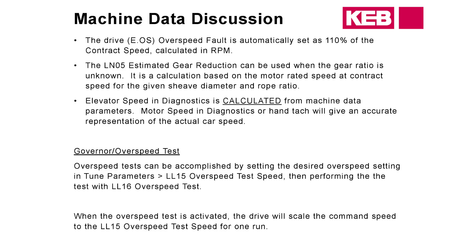Overspeed is calculated at 110% of the contract speed, so make sure US06 is set correctly. Sometimes you may have to adjust the gain settings if you're getting an overspeed while rolling over into contract speed from the XL portion of the profile. If you're getting it at the start of the run right away, it's most likely due to something on the encoder side.